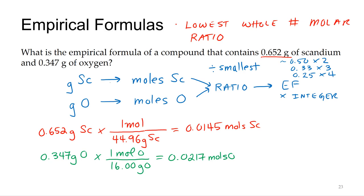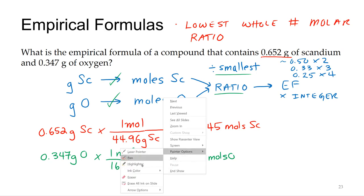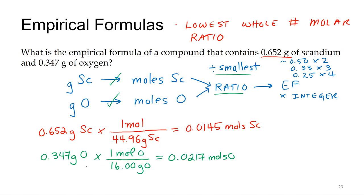We did this part, converted each of the masses into moles. Now let's turn it into a ratio by dividing by the smallest. Obviously 0.0145 is our smallest value. So let's take both of those divided by 0.0145.